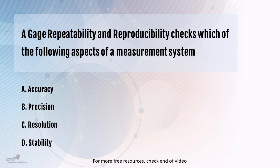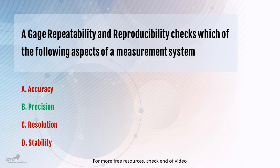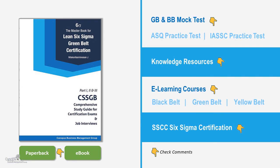The repeatability and reproducibility study is where you want to assess if there is variation because of the equipment and if there is variation because of the appraiser — the person who is measuring. In real life, more than one person may use the gauge in different ways, and sometimes the gauge itself may behave differently. We need to find out if the variation is because of the person or because of the gauge's inherent problem. This study is primarily not related to the standard.